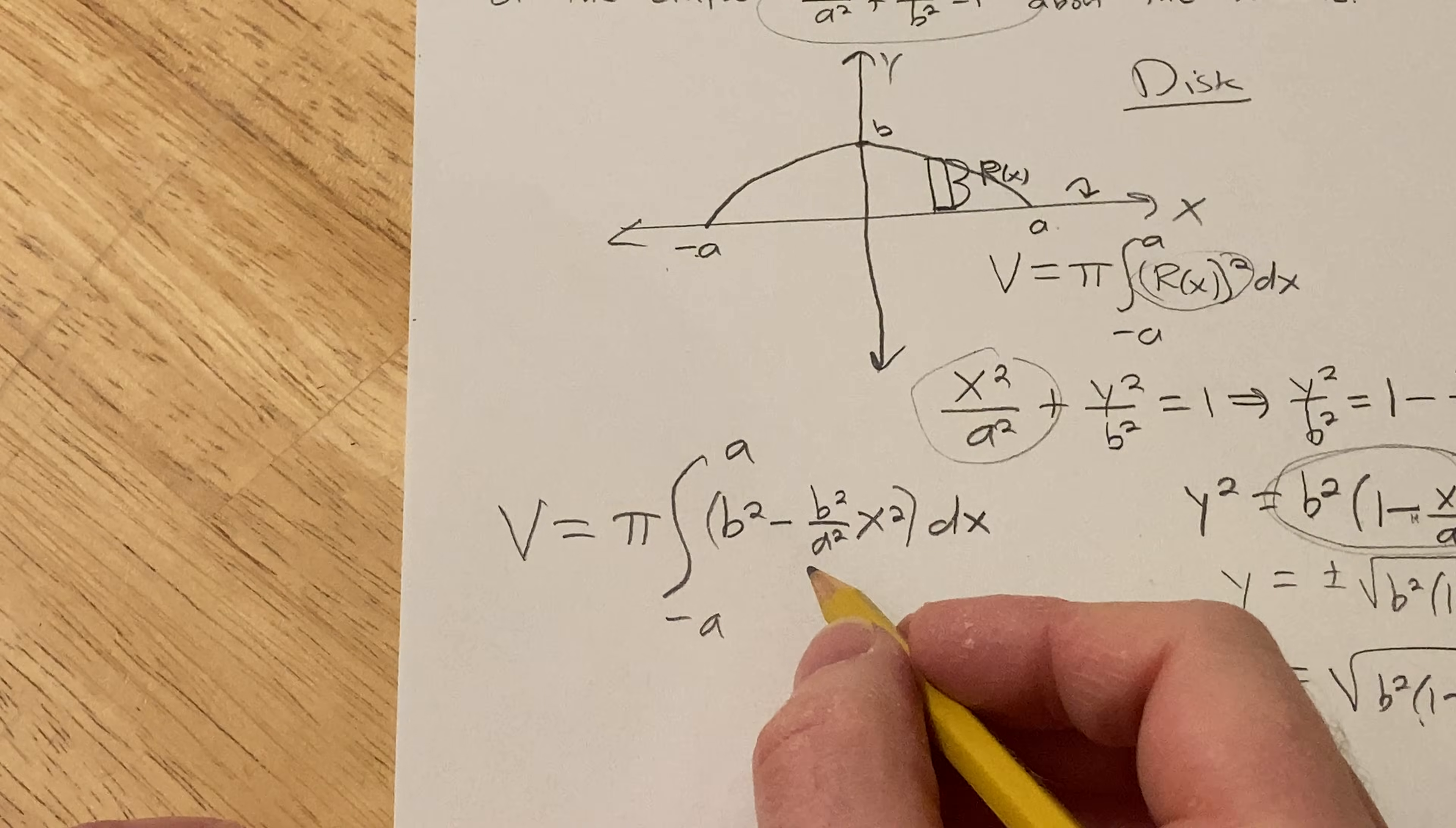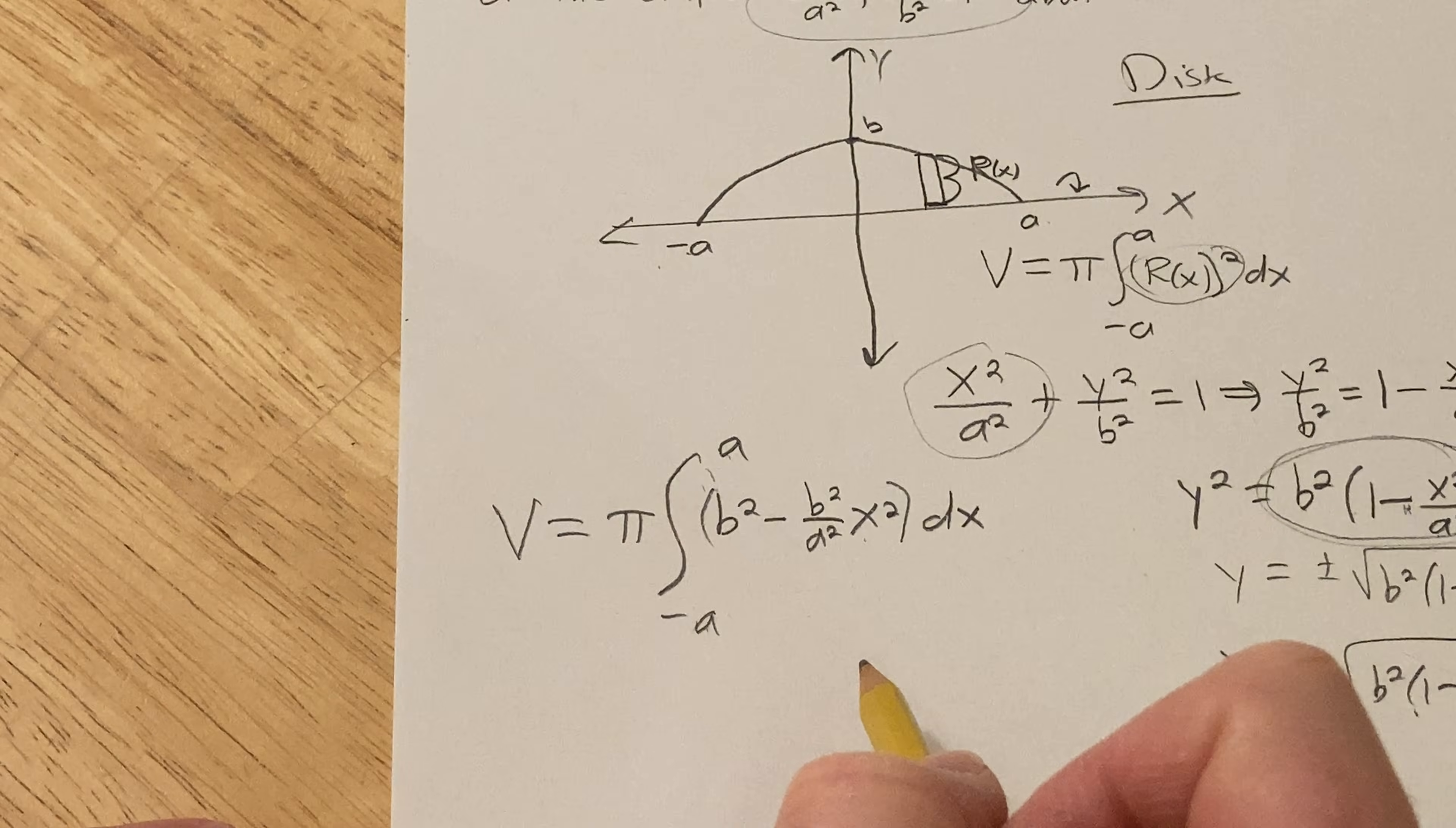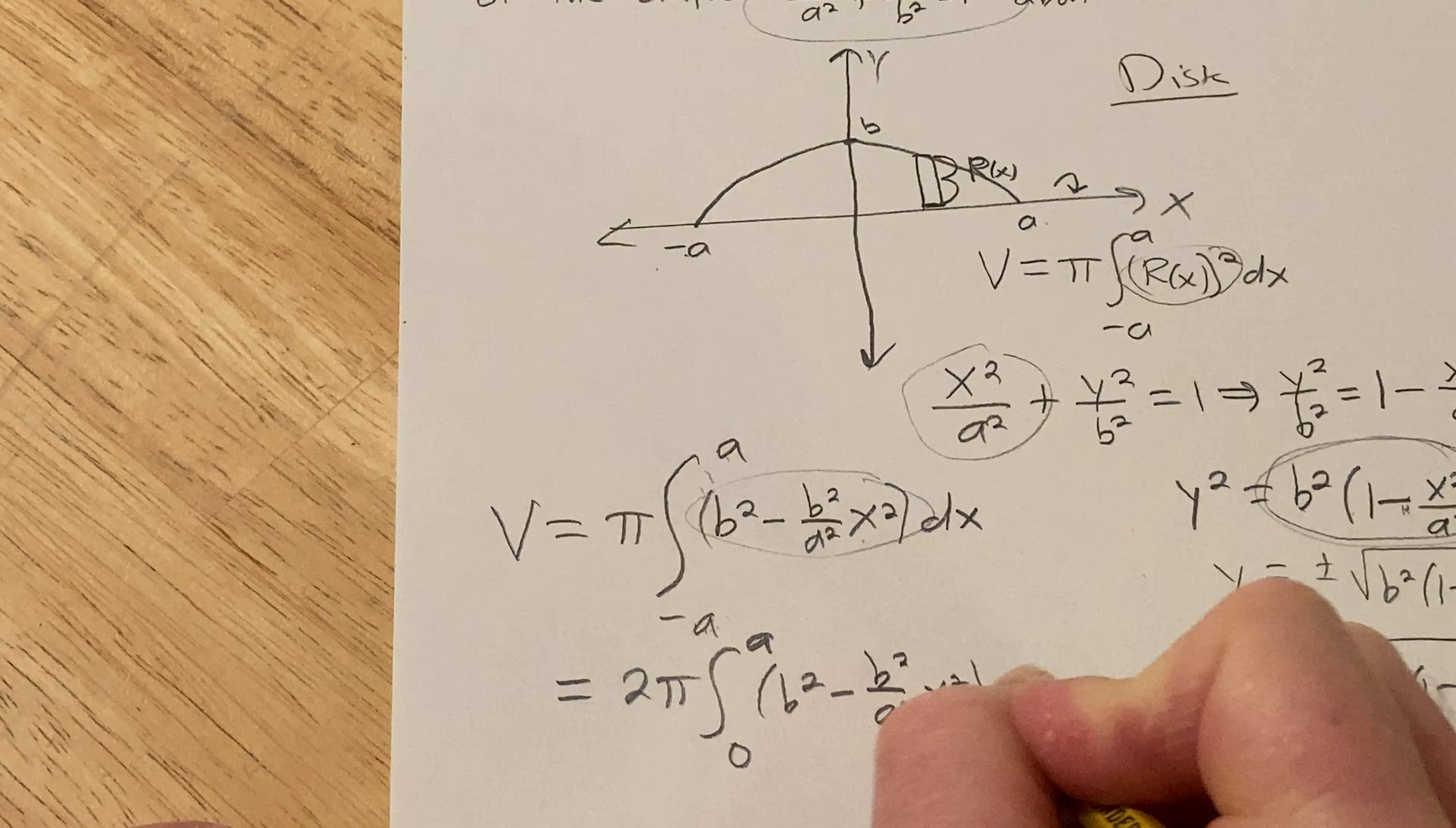Okay, and let's just go ahead and do it. You could probably do something here because this is an even function over a symmetric interval. So you can take a shortcut here in order to do this. You could basically, instead of integrating from negative a to a, you can go from zero to a and double the result. Let's go ahead and do that. So doubling the result, we get two pi, zero to a. So whenever you have an even function over a symmetric interval, you can instead integrate from zero to a and double the result. b squared minus b squared over a squared, x squared dx.